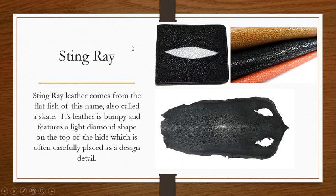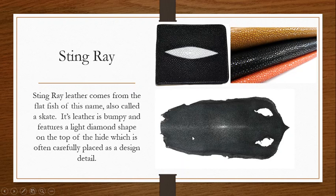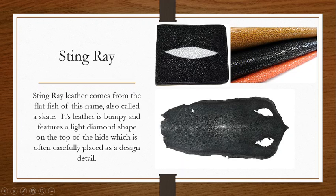Stingray leather comes from the stingray — a flat fish also called a skate. Its leather is bumpy and features a light diamond shape naturally on the hide. The texture is very rounded and pebbly. It's used in all the places we commonly see specialty leathers used.